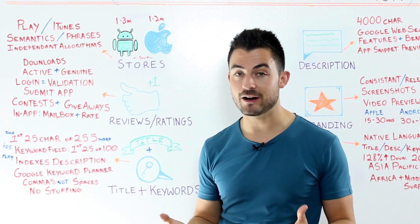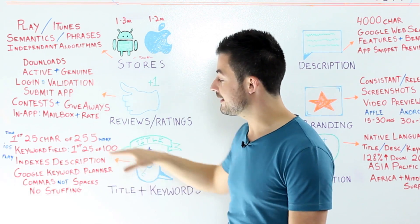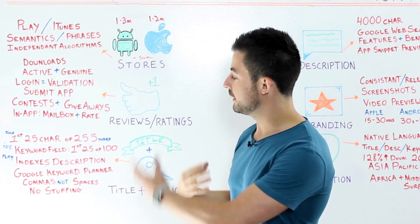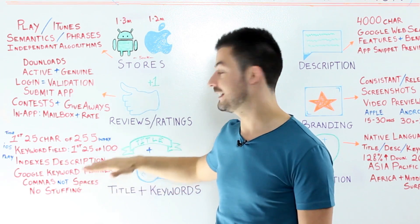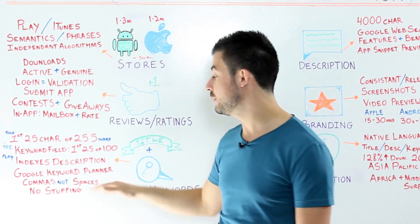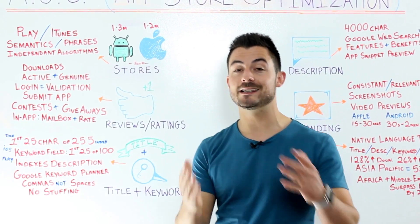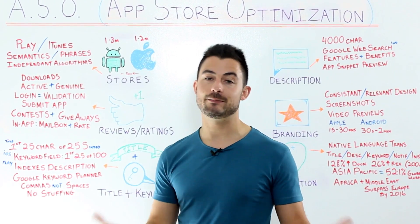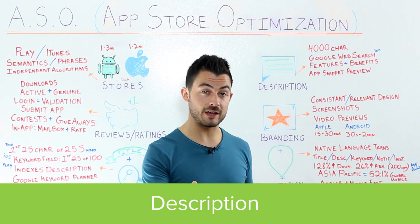The Apple App Store has a keyword field where you can input 100 characters, but only the first 25 are indexed. Google Play is different — instead of a keyword field, you write a description and they use semantic search to extract keywords from it for their ranking algorithm. Don't keyword-stuff the description; keep a balance of optimized, market-targeting content and human-readable copy that sells the app and educates users on its features and benefits.